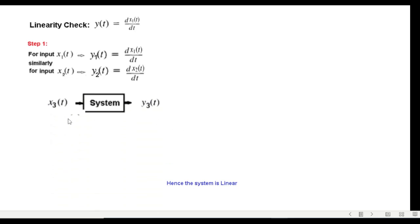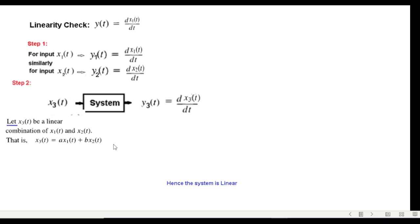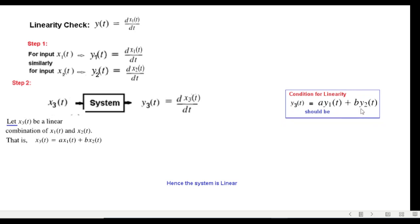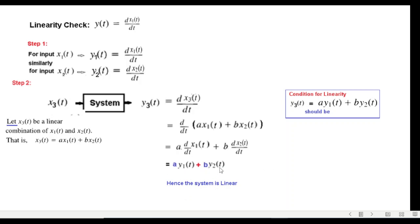Finally, the last example involves a dx/dt term. We find y1 and y2, then for x3 we find y3 by replacing x2 with x3. Substituting x3(t) = a·x1(t) + b·x2(t) and separating terms, we get a·dx1(t)/dt = a·y1(t) and b·y2(t). This equals a·y1(t) + b·y2(t), hence the system is linear. I hope you now have a fairly good understanding to solve any linearity problem.